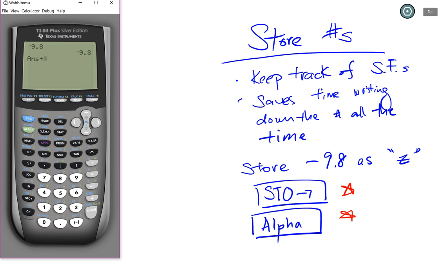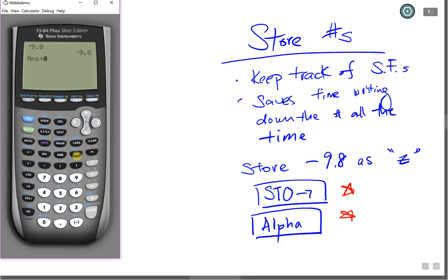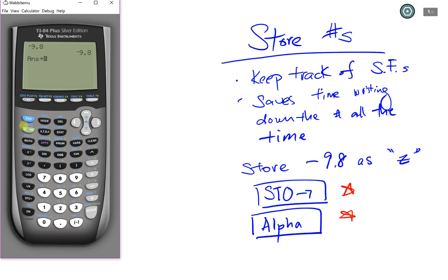I'm going to choose Z, and to do that, notice the letters are color-coded green. To get the color-coded green, we're going to use another special function called Alpha. Similar to your second function, Alpha lets you use the green letters on your graphing calculator.